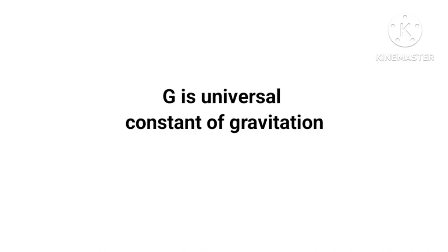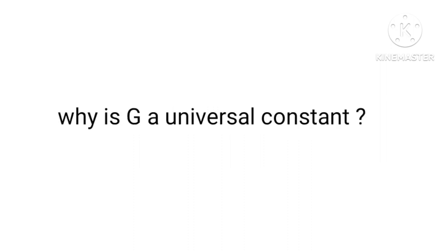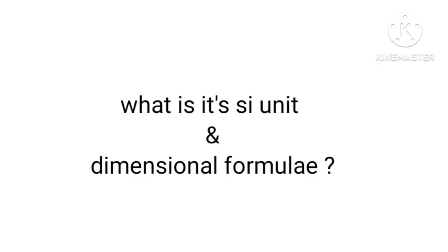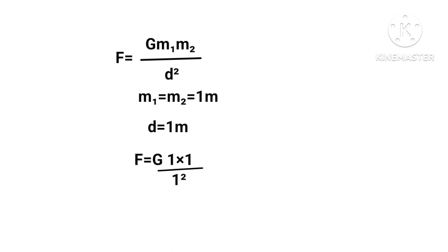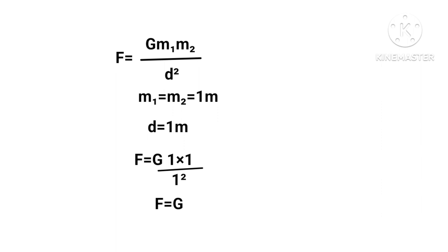Here G is the universal constant of gravitation. The question is: why is G a universal constant? We know F equals G times m1 times m2 upon d squared. Putting m1 equals m2 equals 1 kg and d equals 1 meter, we get F equals G. So G represents the force between two unit masses placed unit distance apart anywhere in the universe. Therefore, G is universal by nature.